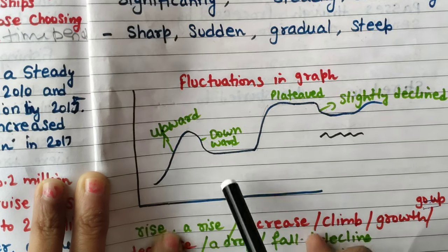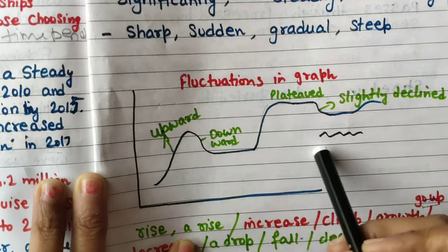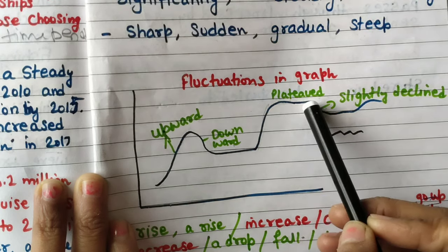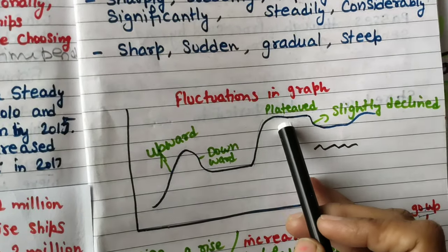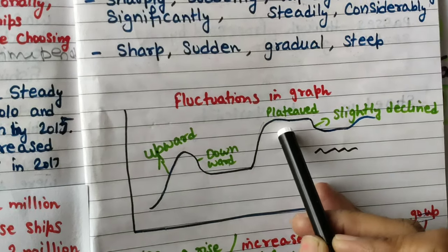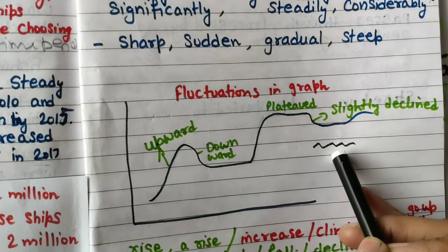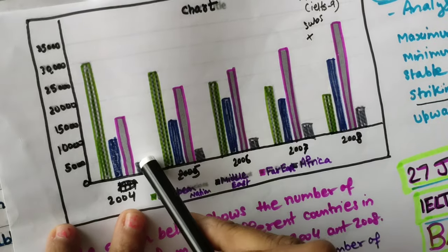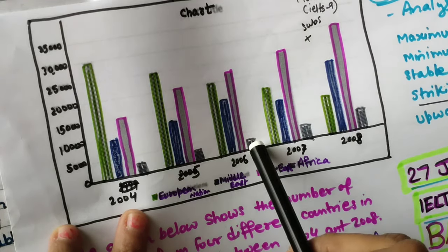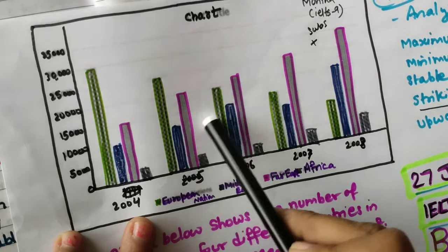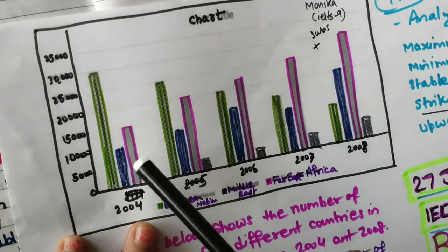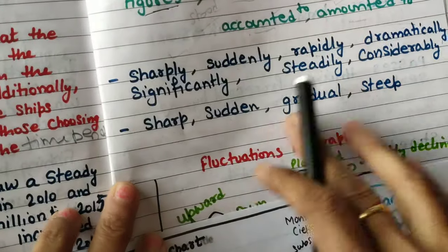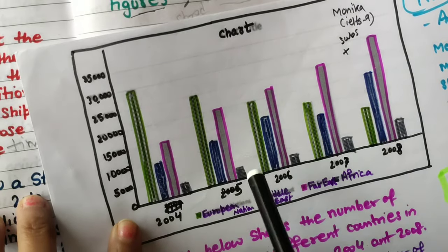In a bar graph, figures go up and down. When figures are going up use 'upward trend'; when going down use 'downward trend'; when stable use: plateau, stabilized number, stable number, slightly decline. For fluctuations - the gray African students show a stable figure; the blue Middle East shows little fluctuations; the magenta Far East shows a clear upward trend. These are the vocabulary words you should use.